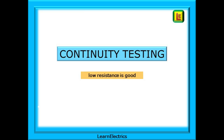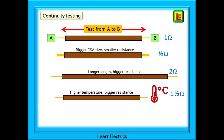We can look at continuity testing in a little more detail now. Remember that with this test the lower the resistance reading the better. If we set our test meter to low ohms and test the cables from A to B we might get a resistance reading of just one ohm. If we choose a bigger size conductor, say twice the cross sectional area, we find that the resistance value reduces as it is easier for current to flow. Thicker copper allows more current to flow and Ohm's law tells us this equates to a lower resistance - reduced to half an ohm.